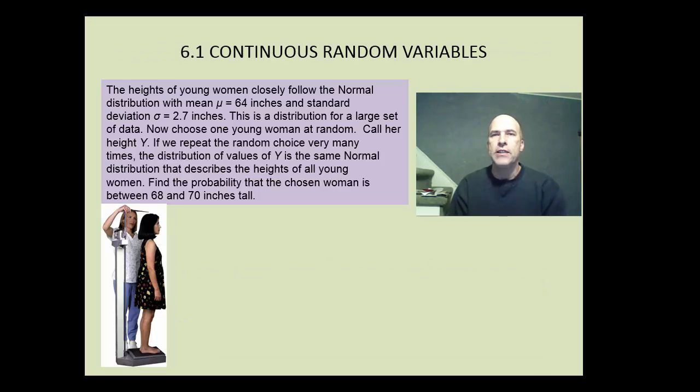Continuous random variables. This will actually not take us nearly as long, although it seems like maybe it would be more complicated. We have an example here about measuring the heights of young women. We're given a mean and a standard deviation, and we want to find the probability that a chosen woman is between 68 and 70 inches tall. Well, this problem should seem familiar to you because we did this in Chapter 2. This is just a normal distribution problem. So we've already done continuous random variables. We just didn't call them that at the time.